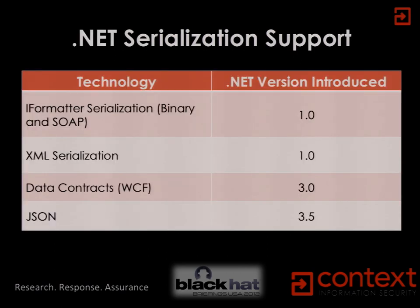Now .NET, being quite a big framework, has a number of different serialization mechanisms built into it. First and foremost is the IFormatter serializers: binary and SOAP, which have been around since the very first version of .NET. Also included in version one was the XML serialization mechanism. Binary serialization is very, very powerful, which is sort of why I'm talking about it. XML serialization is considerably less powerful — you can only create public types.